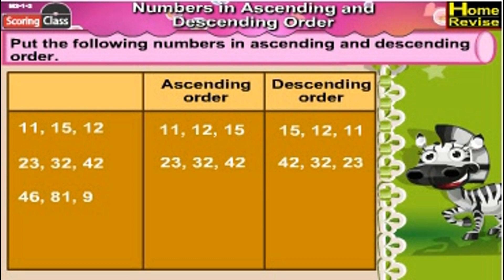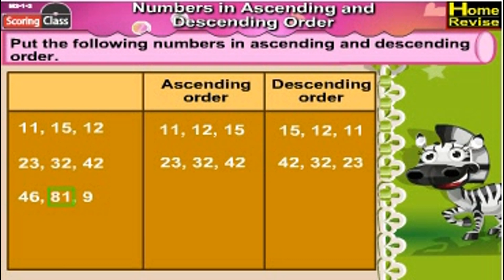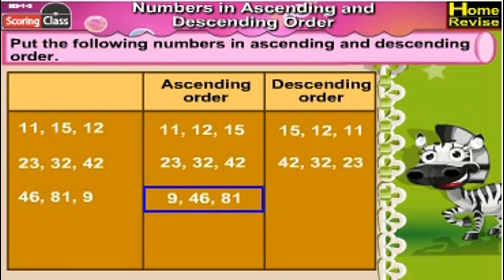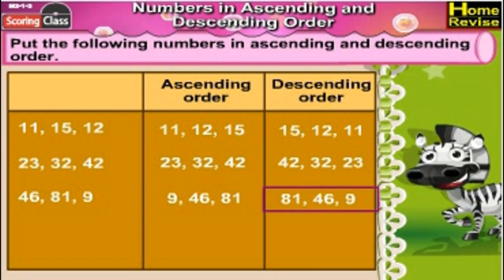Next set: 46, 81, 9. 9 is the smallest of all, and 81 is the biggest. So the ascending order is 9, 46, 81. The descending order would be 81, 46, 9.